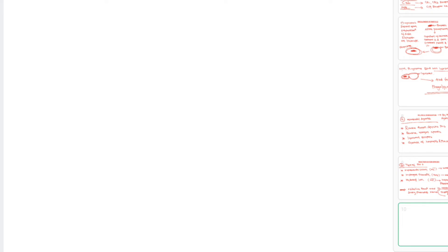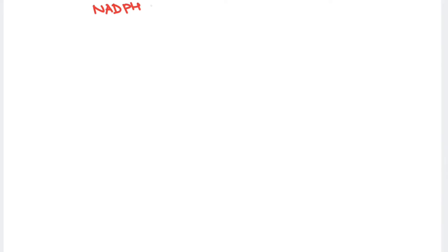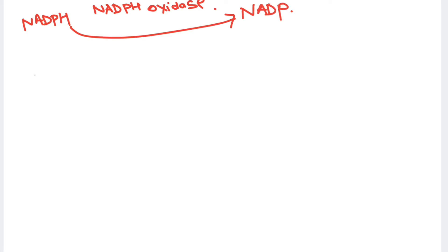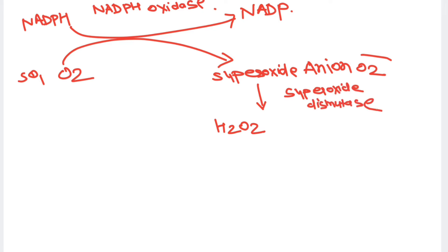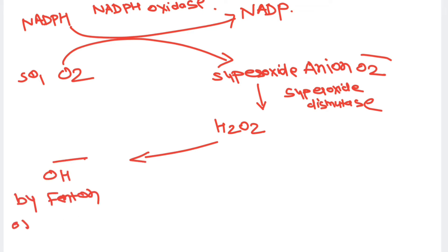On the phagocytic membrane there is an enzyme called NADPH oxidase, which oxidizes NADPH to NADP⁺, converting oxygen into superoxide anion — the first free radical formed. Superoxide dismutase then converts it into H₂O₂. Hydrogen peroxide can be converted into the hydroxyl radical (OH·) via the Fenton reaction or Haber-Weiss reaction.